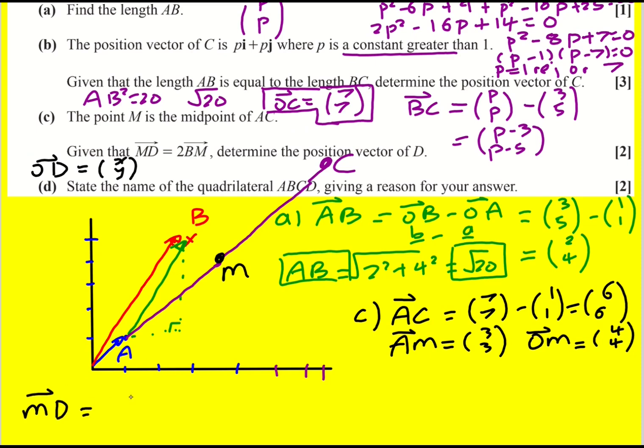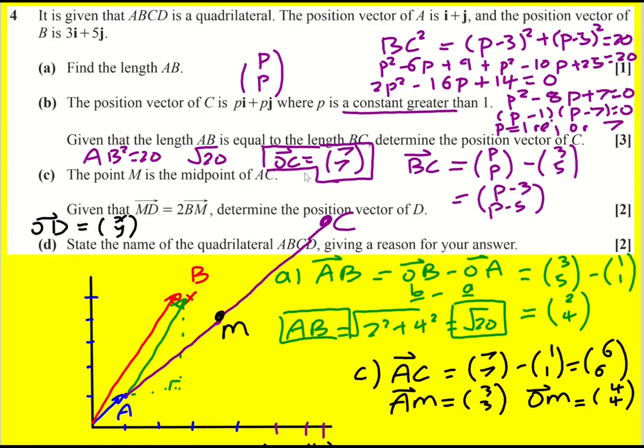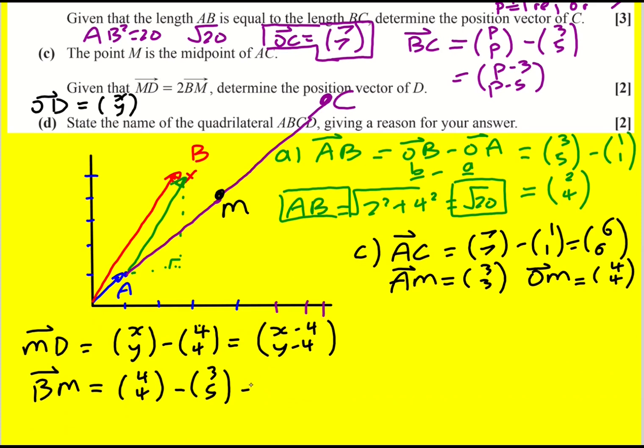So md will equal x, y minus 4, 4. So x minus 4, y minus 4. And then I need to find out what bm is. So that's going to be OM, which is 4, 4 minus OB, which I think I have right at start, 3, 5. So this gives me 1 minus 1. And therefore, I can use this. Must be that x minus 4, y minus 4 is equal to 2 times bm, so 2 minus 2.